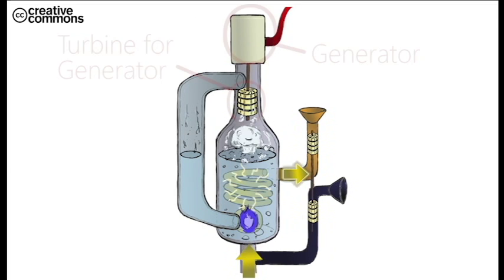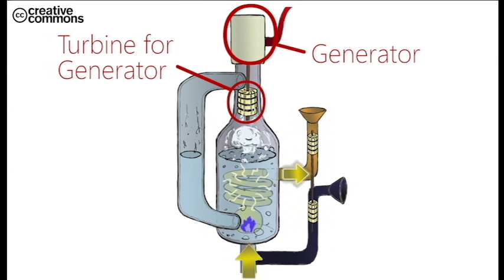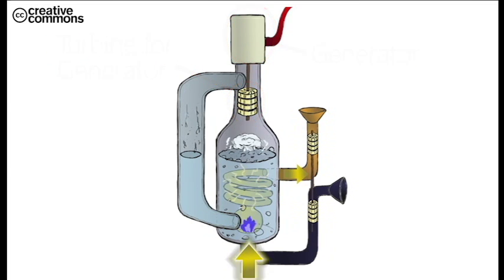The steam produced turns a turbine, which turns the shaft inside a generator, producing electricity. Alternatively, it can be transferred to a pressurized gas tank to be stored for later, in case of emergency.